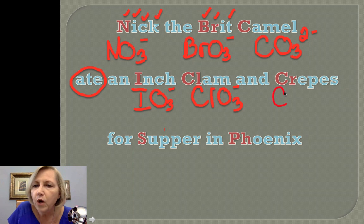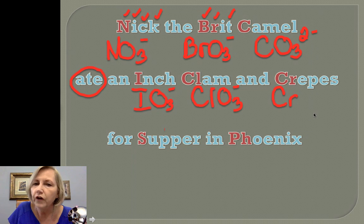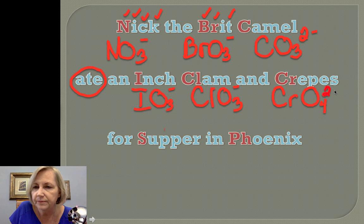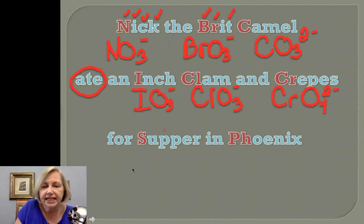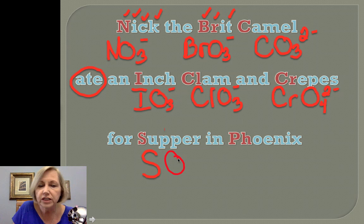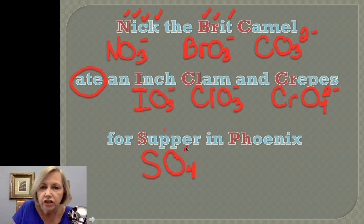'Crepes' — this is one of two that have a metal in them instead of a non-metal. So far all of our ions have had non-metals; this time it's chromate. I have four consonants and two vowels, so that gives me four oxygens and a two negative charge. 'Supper' stands for sulfate: four consonants gives four oxygens, and two vowels gives a two negative charge.